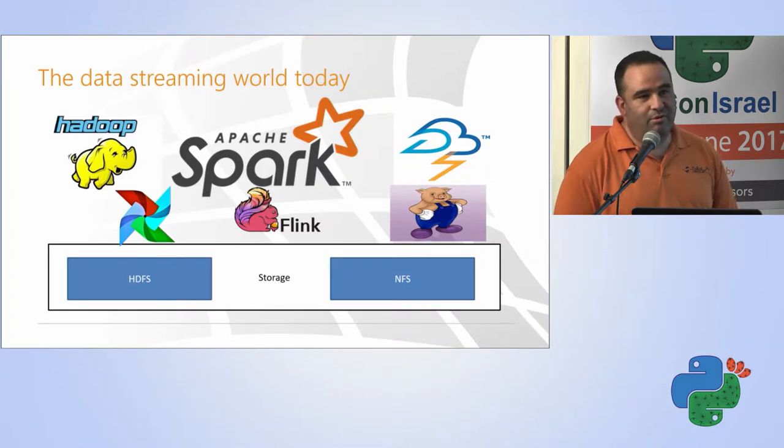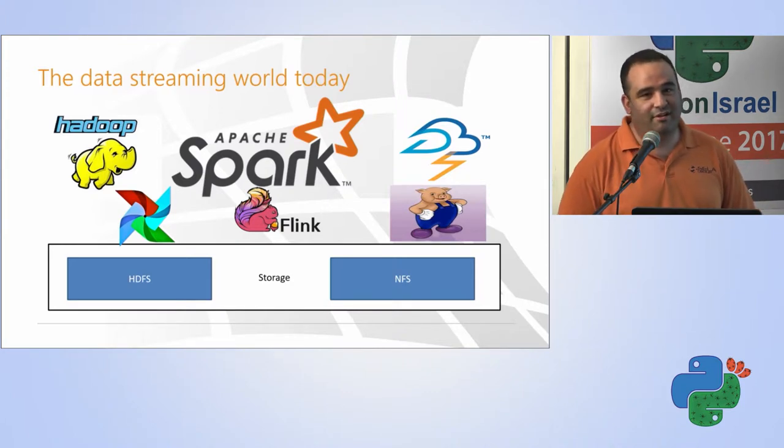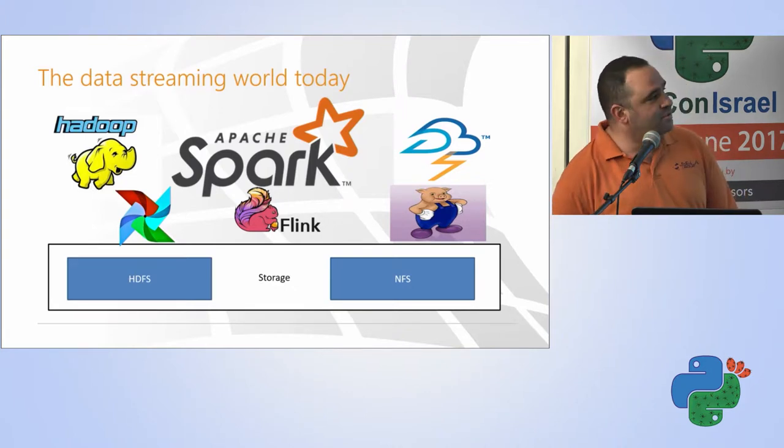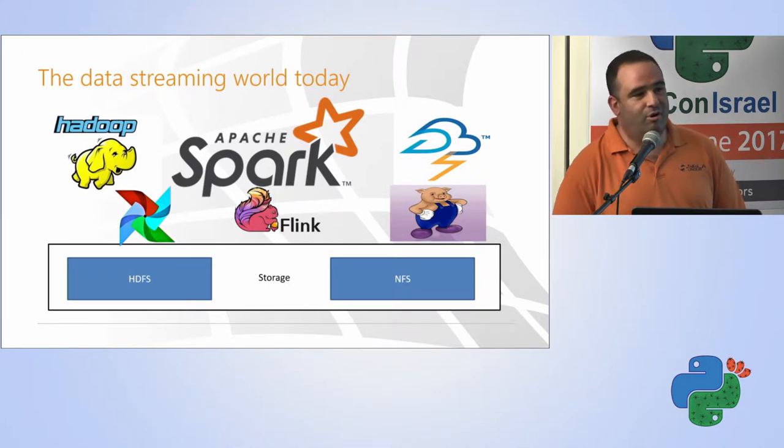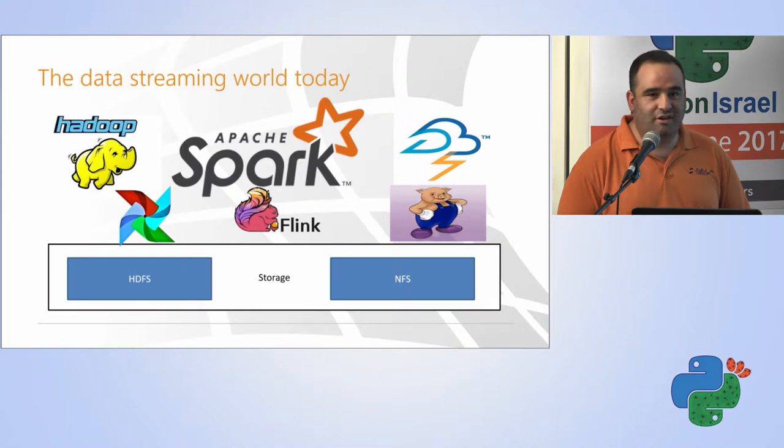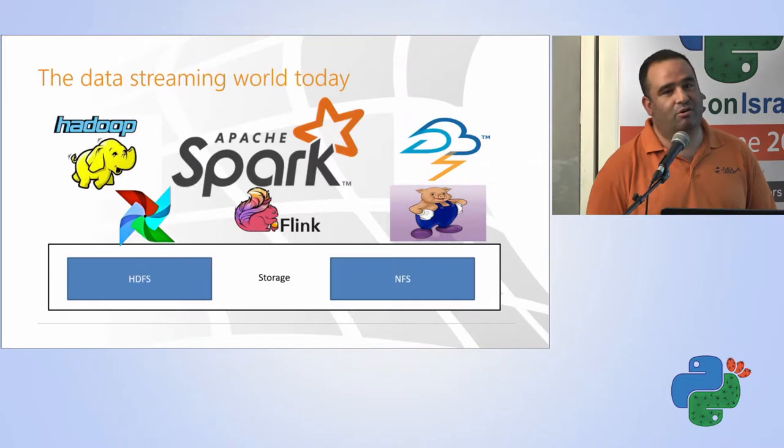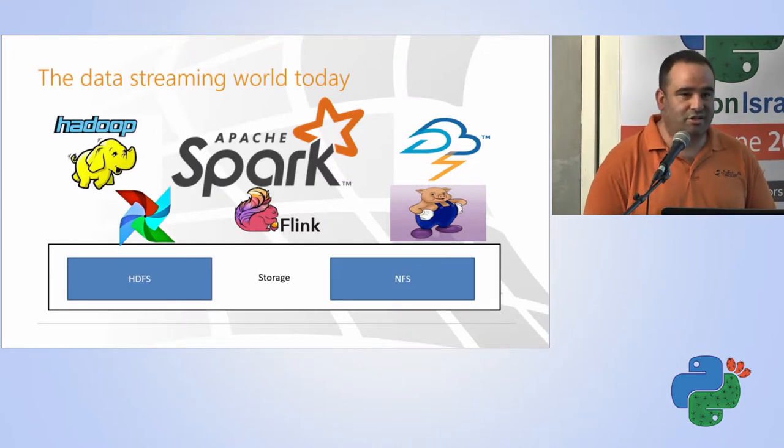So, today, when we talk about data processing, there are a lot of tools. There are jokes that say that if you are not happy with the data processing framework that you have, just wait a few days and another data processing framework will show. You can see Spark, Pig, Flume, Airflow, all kinds of runners, all kinds of data processing frameworks that you can use. And usually, all of them running on HDFS or any other distributed file system, whether it's S3 or Google Cloud Storage or traditionally NFS.